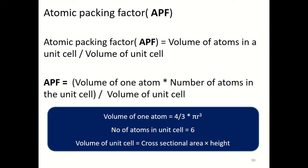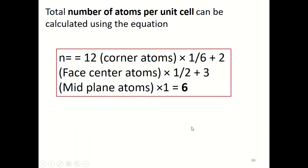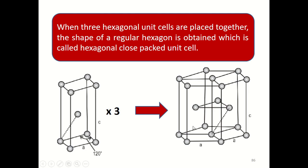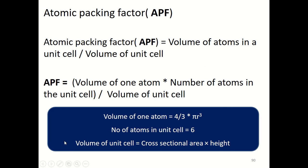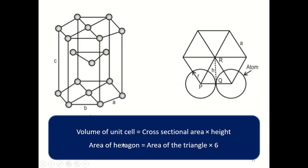For the volume of the unit cell we need to find the cross-sectional area of the hexagon times the height. The cross-sectional area of the hexagon times height gives the volume of the unit cell. So the volume of the unit cell equals cross-sectional area times height.